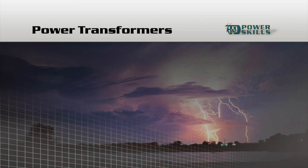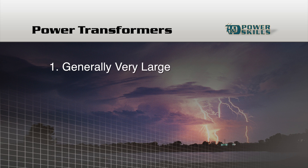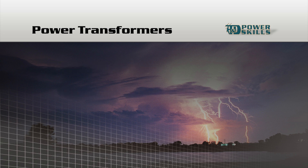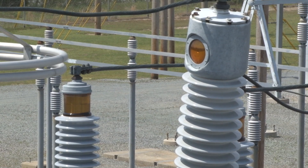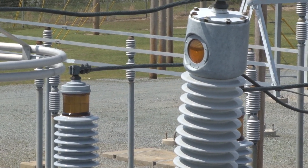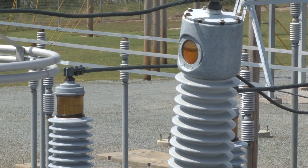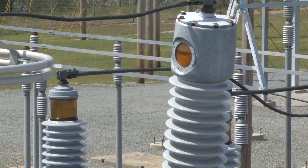A power transformer usually has at least two main recognizable features. It's generally large — larger than most other devices in a substation or switchyard — and it typically has bushings of at least two different sizes. A bushing is an insulating lining for a conductor that insulates the conductor as it passes through an enclosure, such as a transformer enclosure.